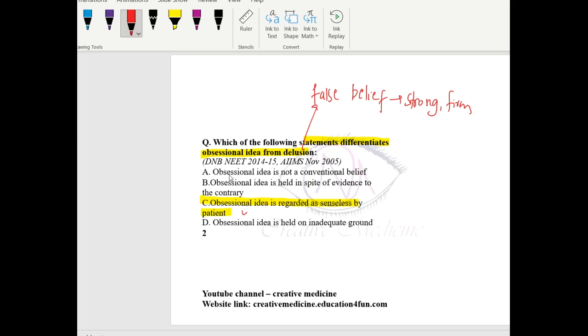Other options: obsessional idea is not a conventional belief. Obsessional idea is held in spite of evidence to the contrary. Actually, obsessional idea is not held in spite of evidence. What is held in spite of evidence to the contrary, even if you provide evidence against the belief, the patient still believes it in delusion, not in obsession. Obsessional idea is held on inadequate ground - false.